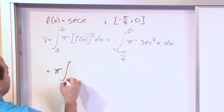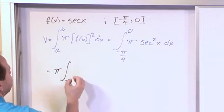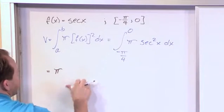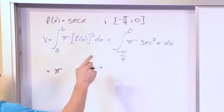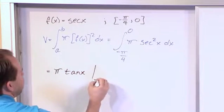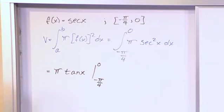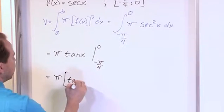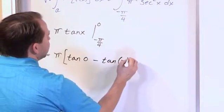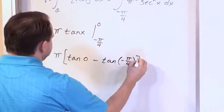We'll have pi, negative pi over 4 up to 0, and actually we don't even need to do that. We know what the integral actually is. The integral of secant squared is just tangent of x, and now we need to evaluate from pi over 4 up to 0. Alright, so let's just crank through it. So we have a pi. We'll open up a bracket and we'll say tangent of 0 minus tangent of negative pi over 4.